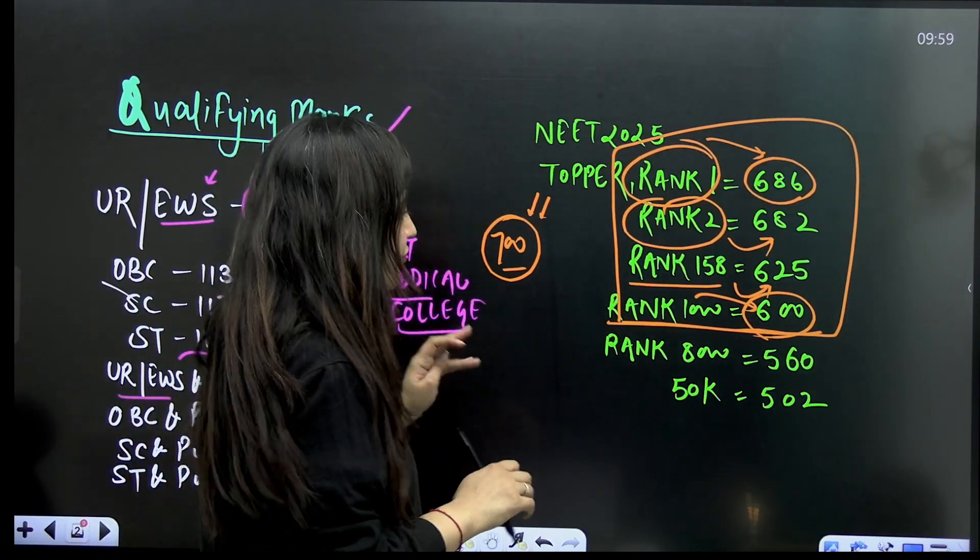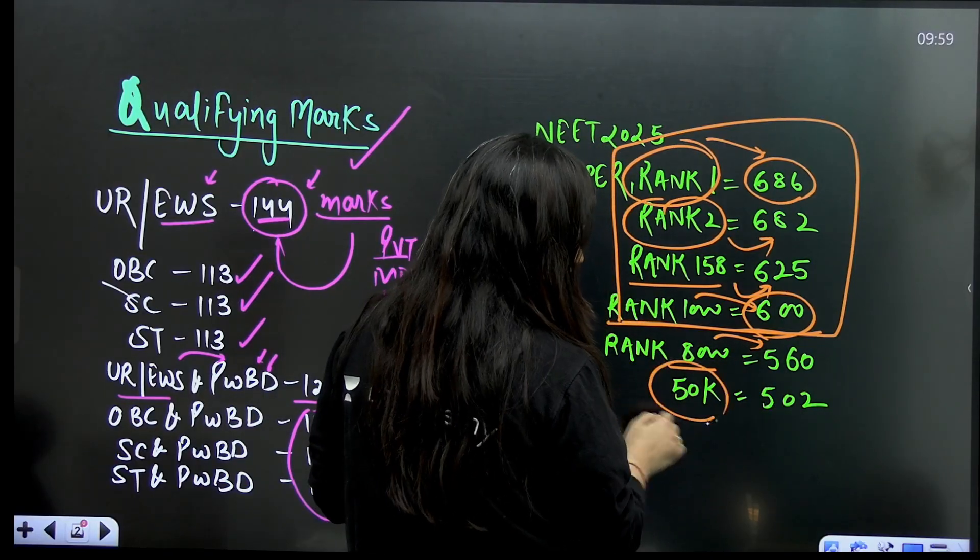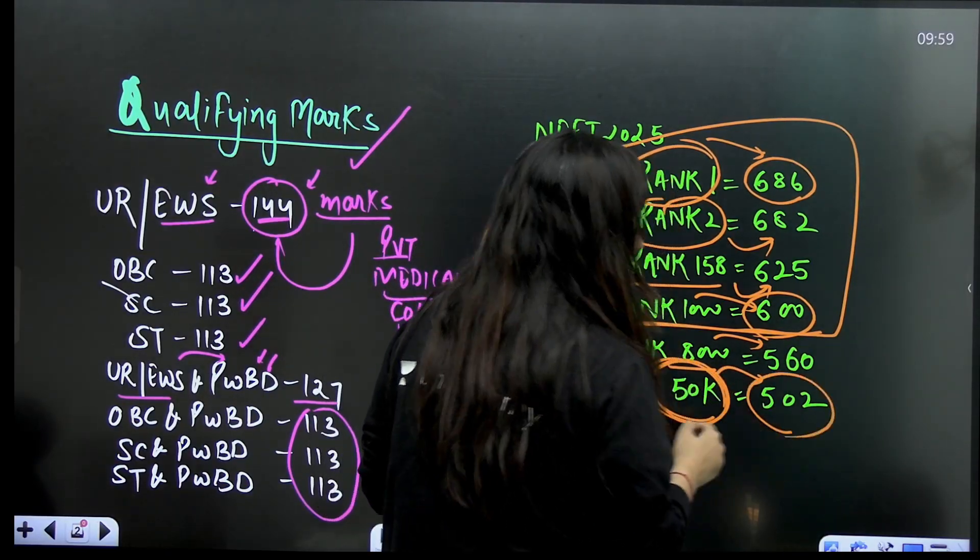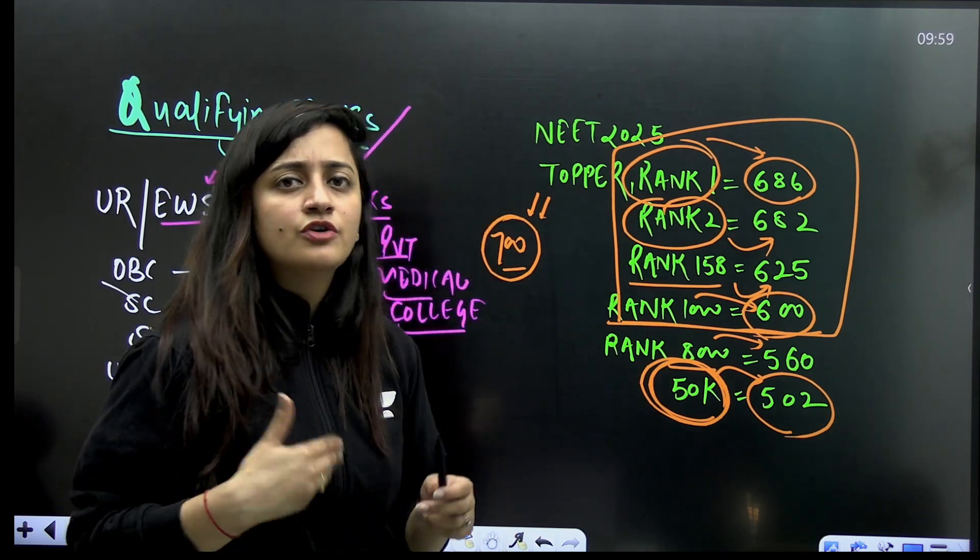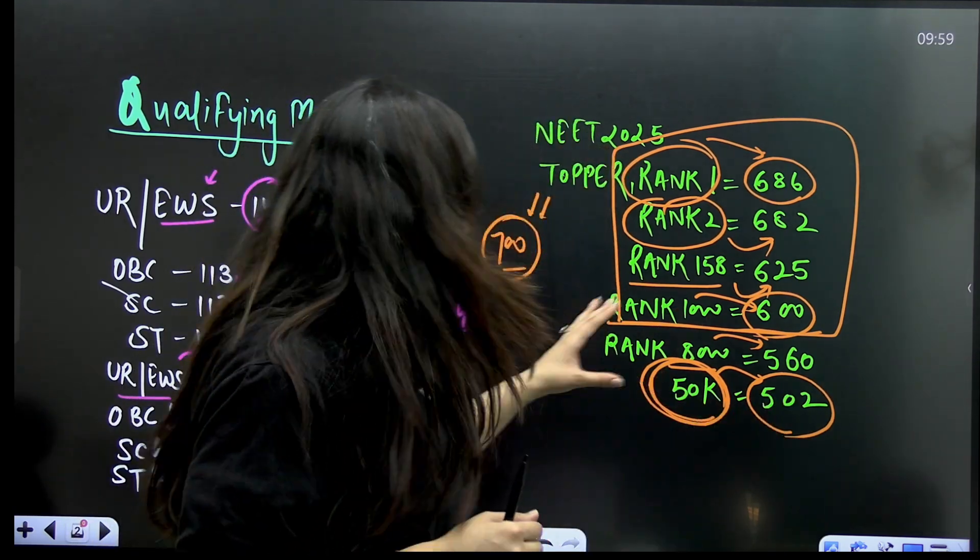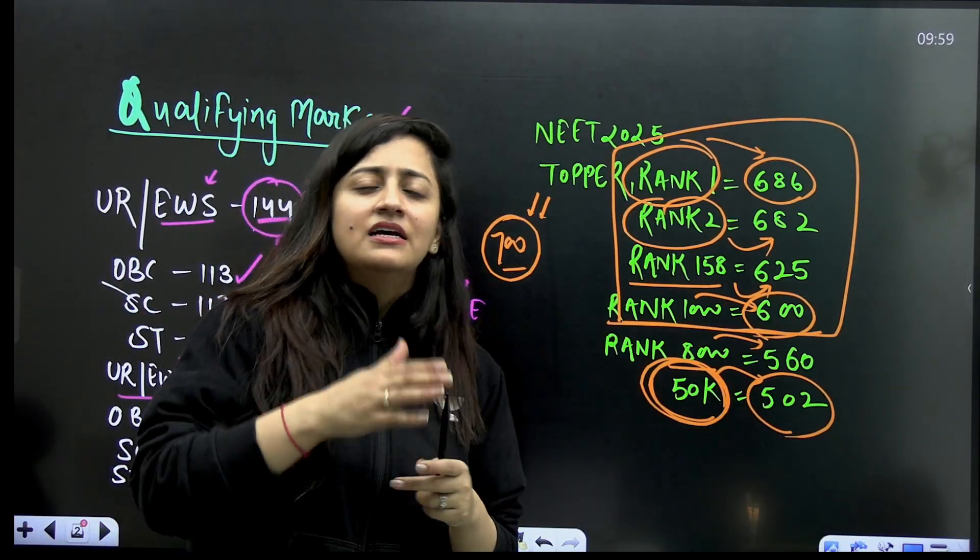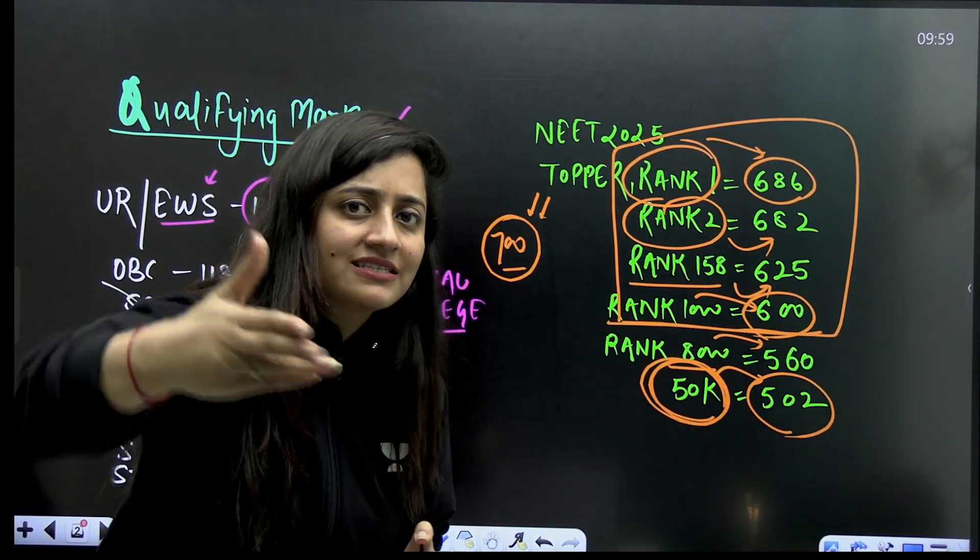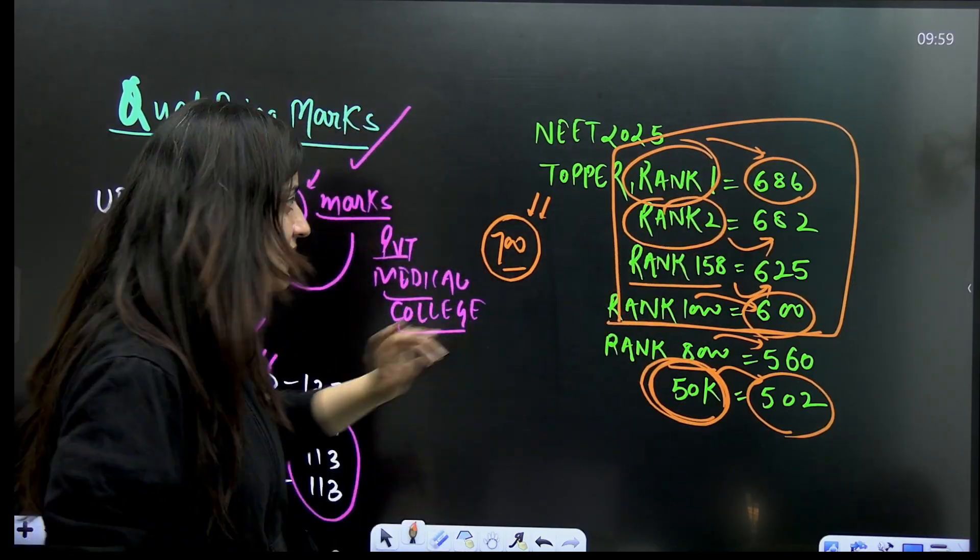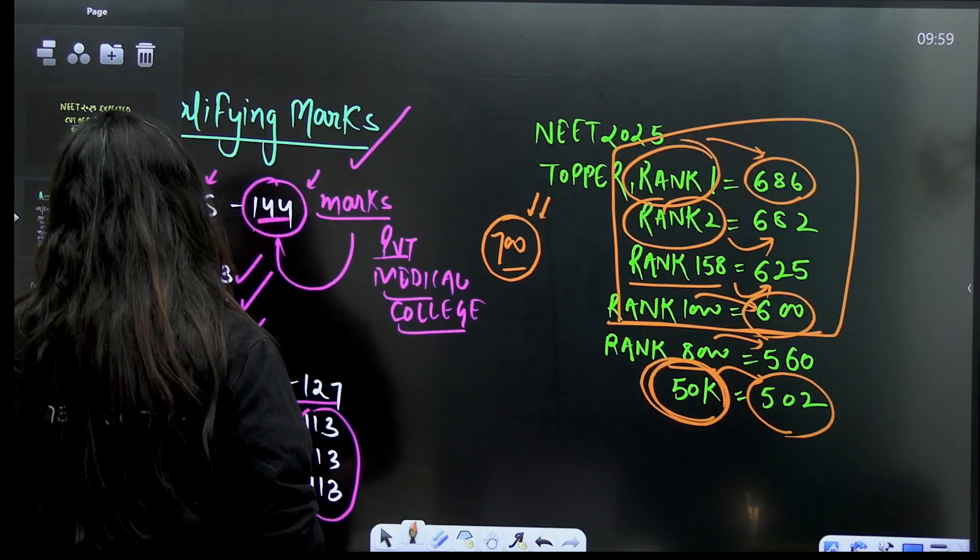If I talk about rank 8000, approximately 560 marks, and for 50,000 it is 502. Like if somebody is having 504, approximately the rank is 50,000 something. You can get an idea of it.